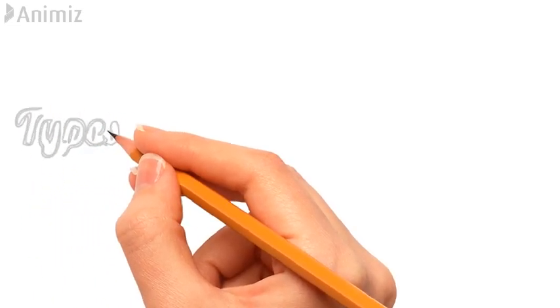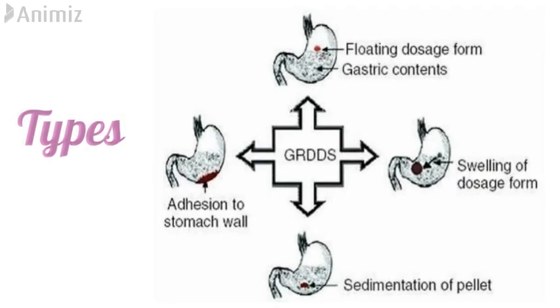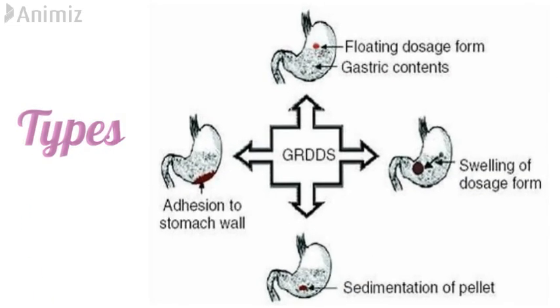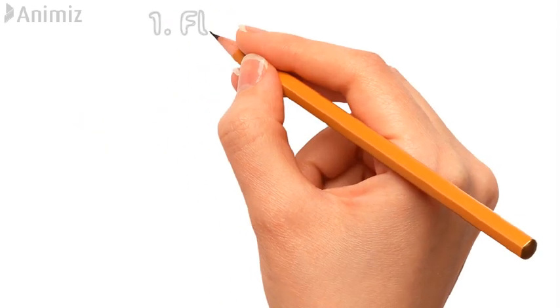There are basically four types of gastro-retentive drug delivery systems: floating systems, swelling systems, high density systems, and mucoadhesive systems.